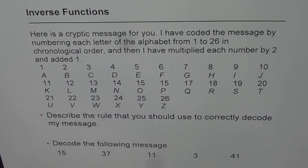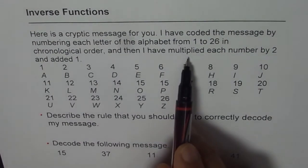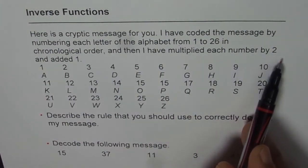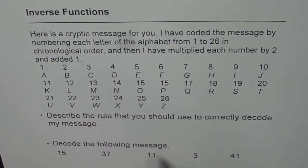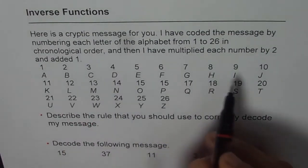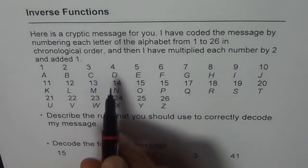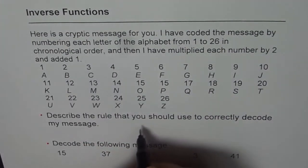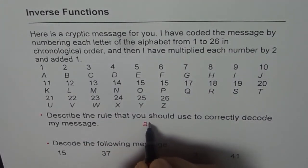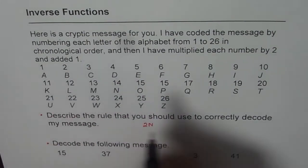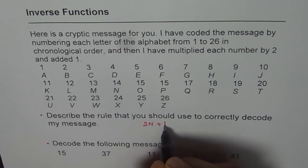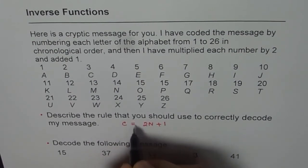Now the code is that I have multiplied each number by 2 and added 1. So these are the numbers associated with each letter. So each letter number is multiplied by 2, so it is 2 times n, whatever the number is, and added 1, plus 1. So that is the code for us.